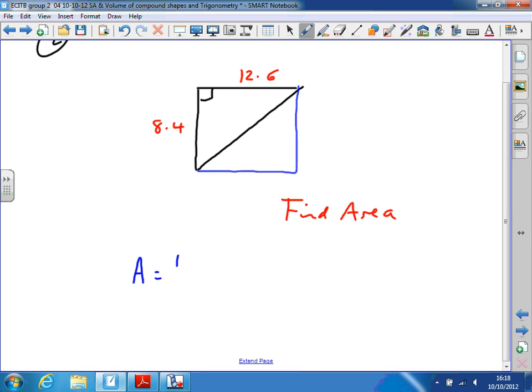Area is half base times height. It doesn't matter which side I call the base, so it's just a half times 8.4 times 12.6, which comes to 52.92. Or 52.9 to 3 significant figures, possibly more appropriate.